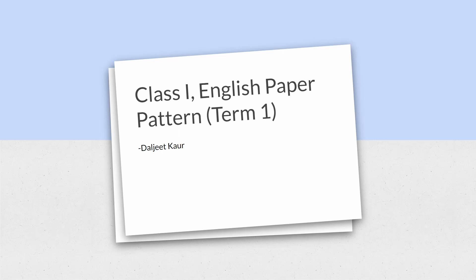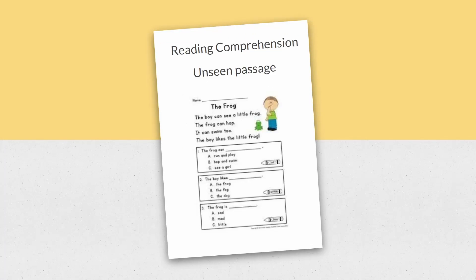The first section will be reading comprehension, which consists of an unseen passage with multiple choice questions (MCQs). Children have to circle or put a tick mark in the correct option.